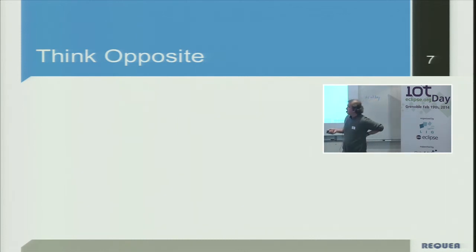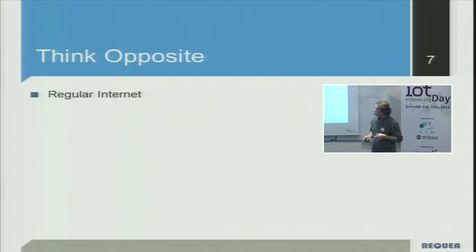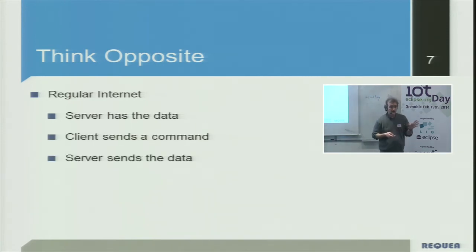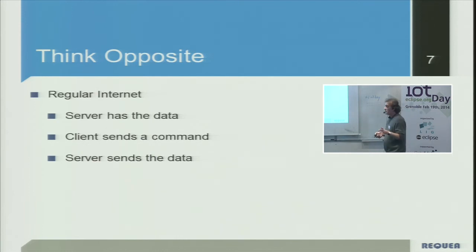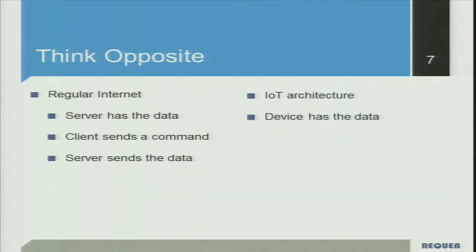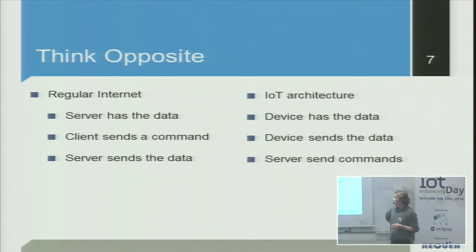In my opinion, IoT is really about thinking in the opposite direction. In the regular internet, the server has the data — the client sends a request and the server sends the data, so everything is organized around client-to-server: security, communication, data storage, and implementation of the different architecture layers. In IoT, the device has the data through actuators and sensors. The device sends data or collects data, and the server sends the command. So everything is reverted.